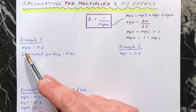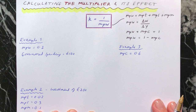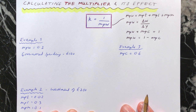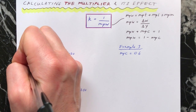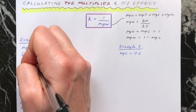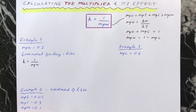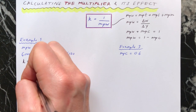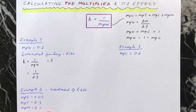The first example: the marginal propensity to withdraw is 0.2 and there's been government spending of £100. What's the size of the multiplier and what effect does it have on the economy? The first thing to do is look at your formula. The multiplier k equals 1 divided by the marginal propensity to withdraw. They've told us the MPW, so it's simply 1 divided by 0.2, which means the multiplier value is 5.